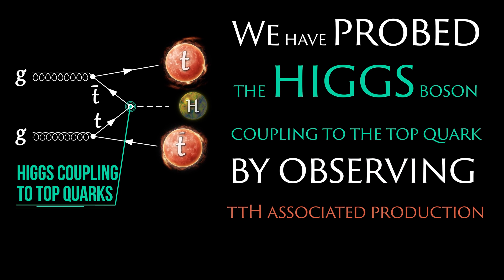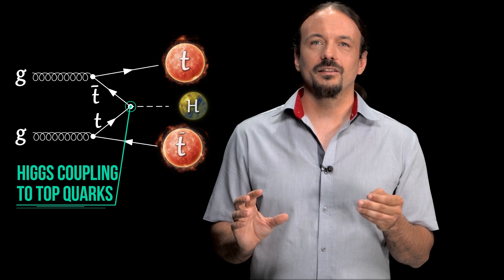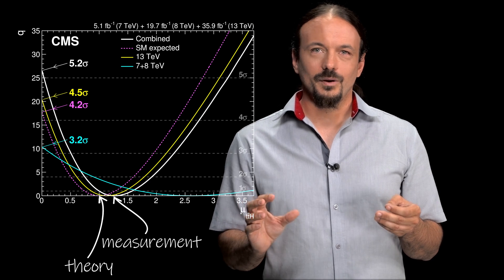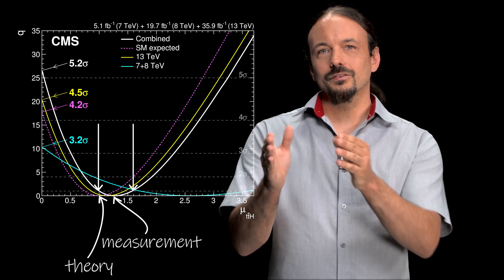But is this measurement only interesting because it was hard? No, it's also because of the result. We have now seen that the Higgs does interact with the top quark by observing TTH-associated production. And we have measured the interaction to be about 25% stronger than our theory predicts. But the uncertainty of this measurement is about 25%.